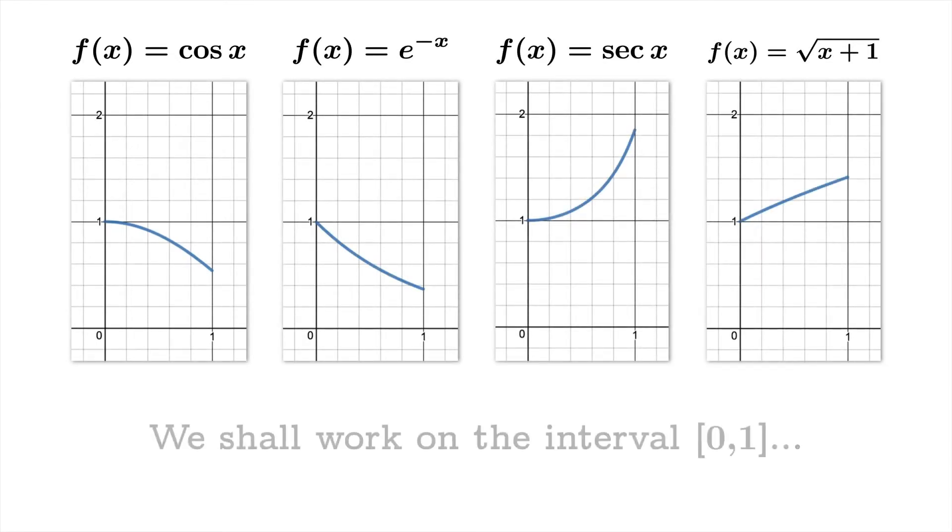Here's where we'll get experimental. We're going to look at four functions: cosine x, e to the negative x, secant x, and square root of x plus 1. And we're going to work with them on the same interval from 0 to 1.